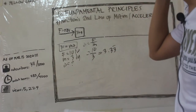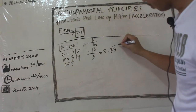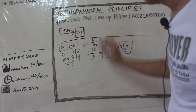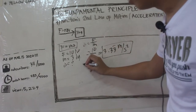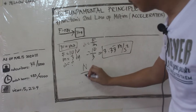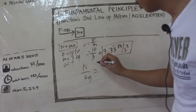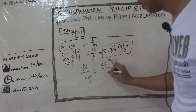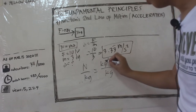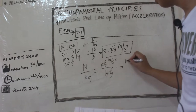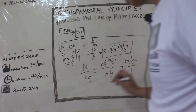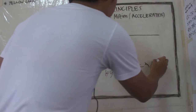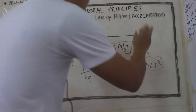Ano nga ba yung unit natin? Meter per second squared. Kasi dito sa bawat Newton over kilogram — and we all know that Newton is kilogram meter per second squared — so kilogram cancels out and we are left with meter per second squared, which is the unit natin dito.